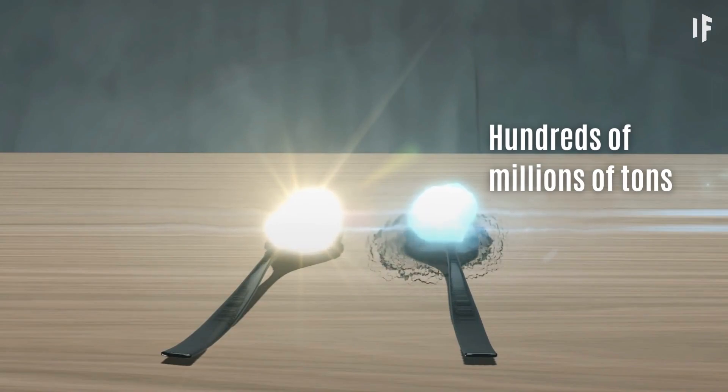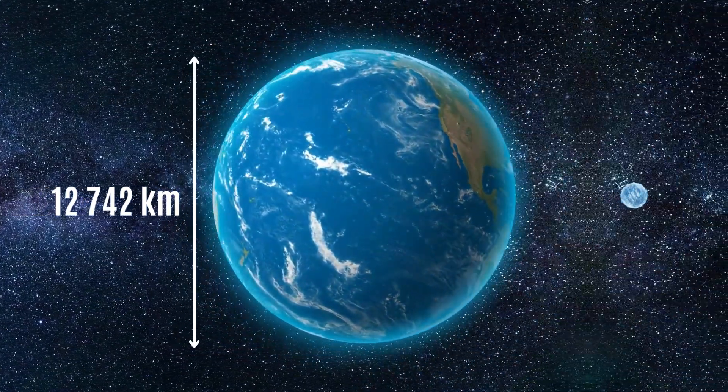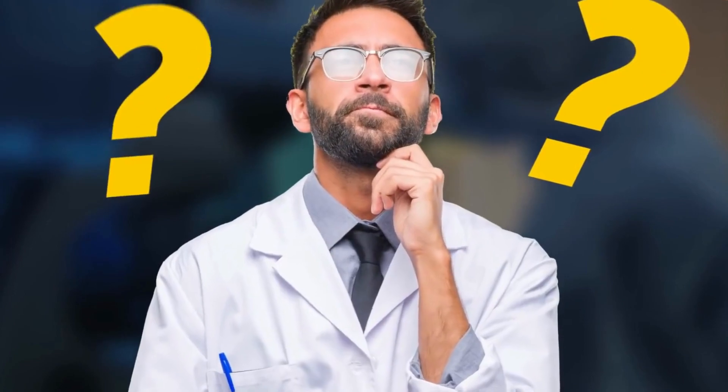To put it into perspective, the entire Earth compressed to neutron star density would only be 305 meters in diameter. And finally, an interesting fact.